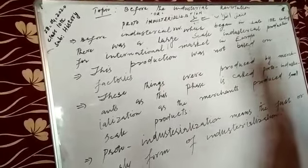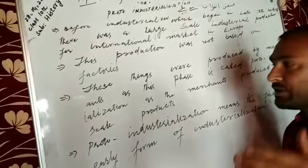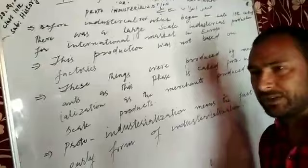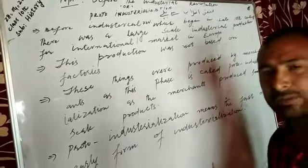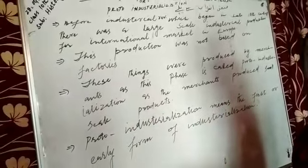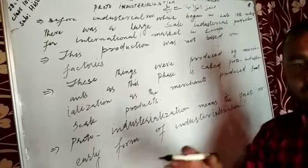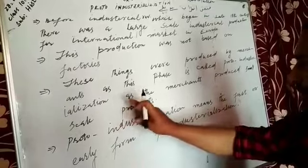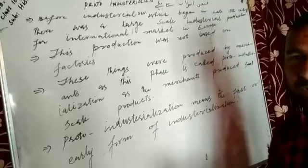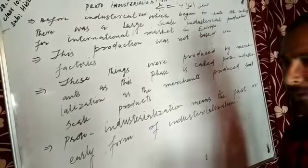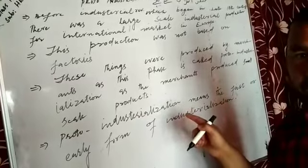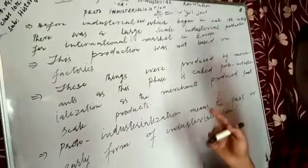These small-scale products were produced by merchants — tajar loog banaya karte the. Whether they made them themselves or had workers make them is a separate matter. But these small-scale products were produced by merchants. This phase is called the Proto-Industrialization phase.